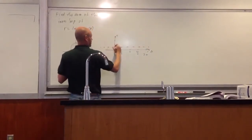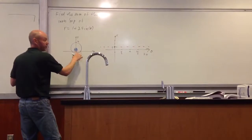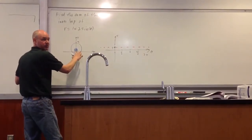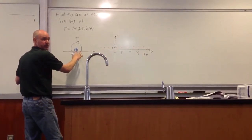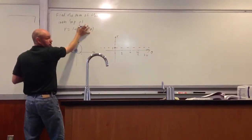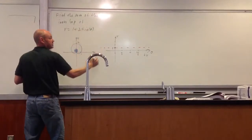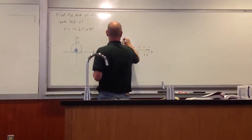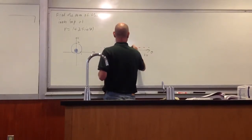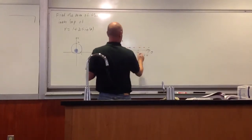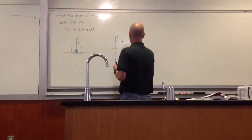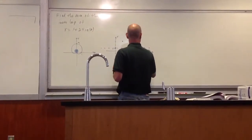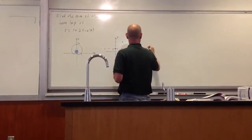So the graph is going to start here at r equals one, and theta equals zero. Its amplitude is going to go up two places, back down to zero — its relative zero — then down two places, and back up to zero.